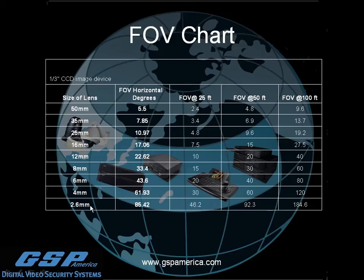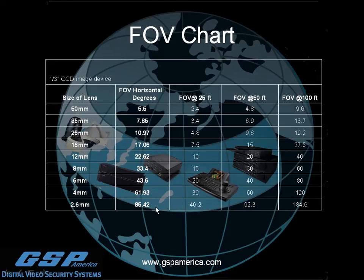Here's a quick chart showing the difference in degrees of view relative to lens size. A 50mm lens gives a horizontal degree of view of 5.5 degrees — at 25 feet you'd see 2.4 feet wide, at 50 feet 4.8 feet wide, and at 100 feet 9.6 feet wide. On the other end, a 2.6mm lens gives a very wide 85.42 degrees — at 25 feet you'd see 46 feet wide, at 50 feet 92 feet wide, and at 100 feet 184 feet wide.